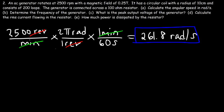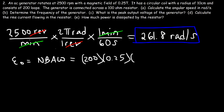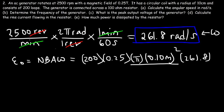For part c, the peak output voltage uses the formula E = N·B·A·ω. Here N is 200 loops, B is 0.25 Tesla, and the area is π·r² where the radius is 10 centimeters (0.10 meters), so A = π×(0.10)² m². Multiplying with ω = 261.8 radians per second gives a peak output voltage of 411.2 volts.